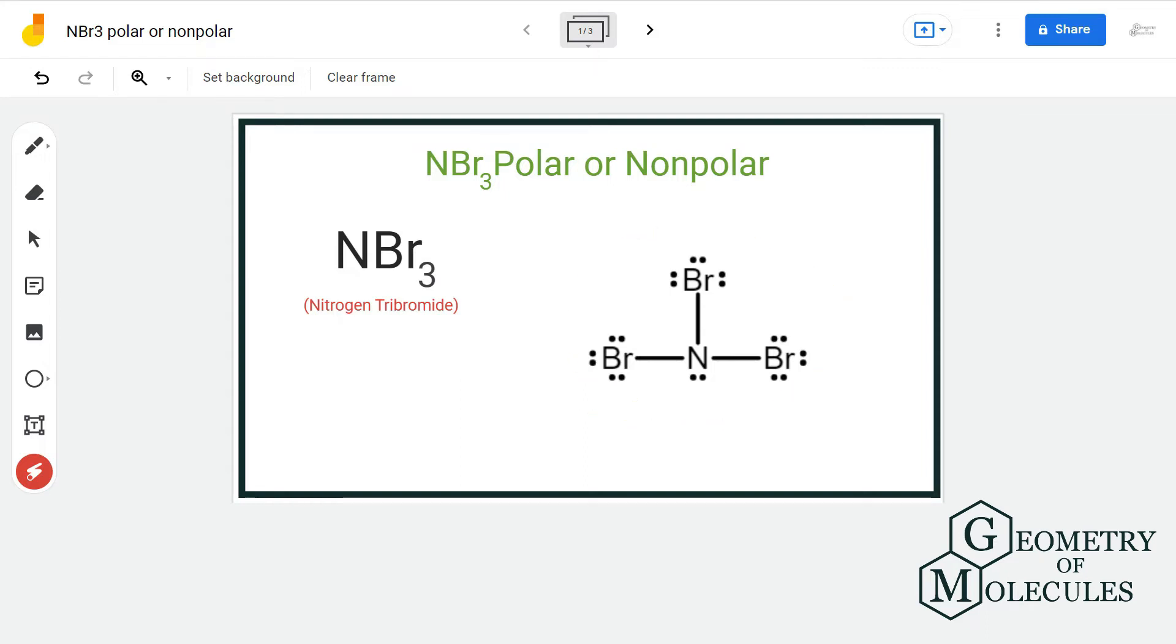at its Lewis structure. In this case, the central atom nitrogen is forming three single bonds with the bromine atoms. Besides that, the nitrogen atom also has a lone pair of electrons which does not participate in any bond formation.